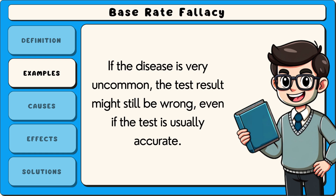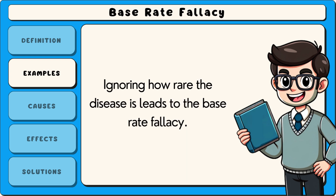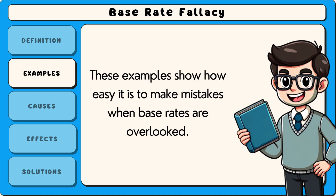If the disease is very uncommon, the test result might still be wrong, even if the test is usually accurate. Ignoring how rare the disease is leads to the base rate fallacy. These examples show how easy it is to make mistakes when base rates are overlooked.